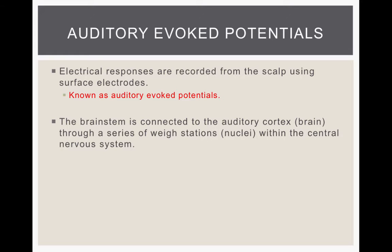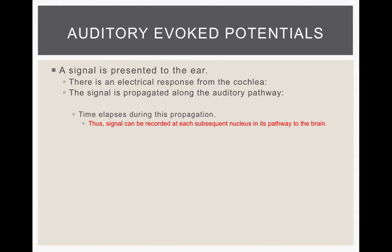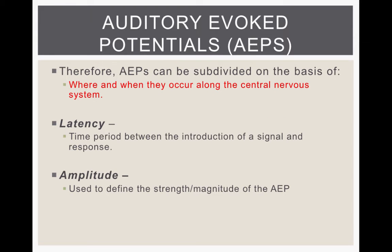The electrical responses are recorded from the scalp using surface electrodes, and this is known as the auditory evoked potential. The brain stem is connected to the auditory cortex through a series of way stations within the central nervous system. The signal is presented to the ear, there is an electrical response from the cochlea, and then the signal is propagated up through the auditory pathway. Time elapses during this propagation, so we can measure the latency — the time as impulses travel up the pathway — and the amplitude, or the strength and magnitude of these responses.